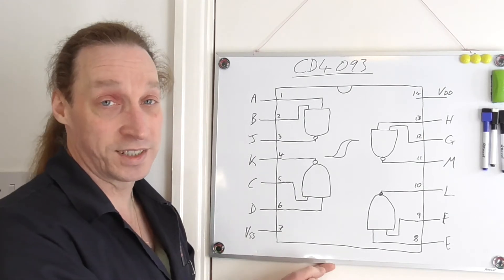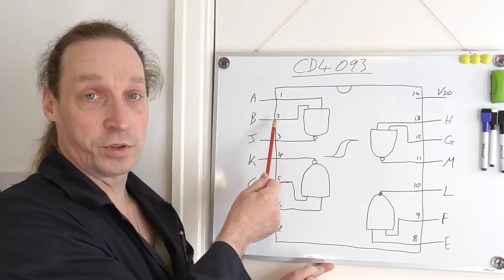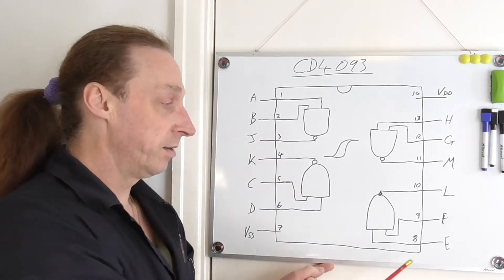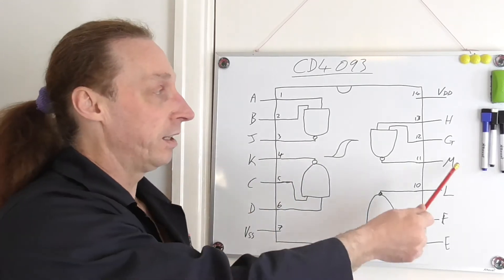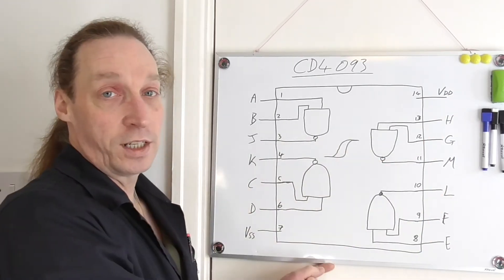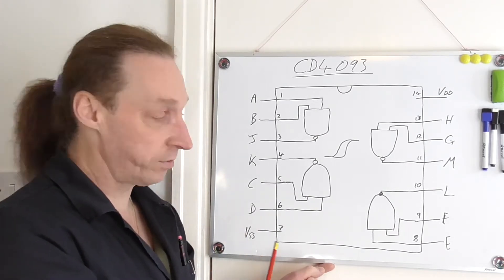Labeling is standard that you'll get on all these type ICs. The inputs label first A, B, C, D, E, F, G, H, and then the outputs J, K, L, M. VDD on pin 14, VSS ground on pin 7.